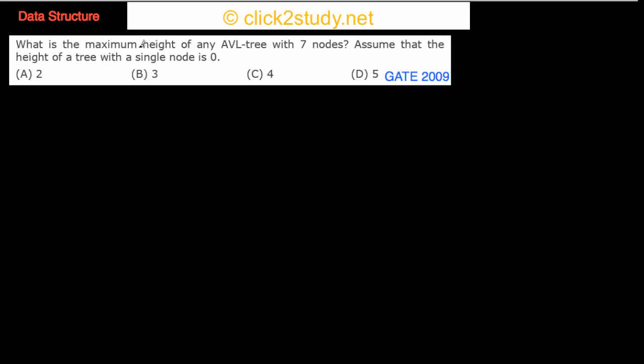The next question is what is the maximum height of any AVL tree with seven nodes, assuming that the height of a tree with a single node is zero.